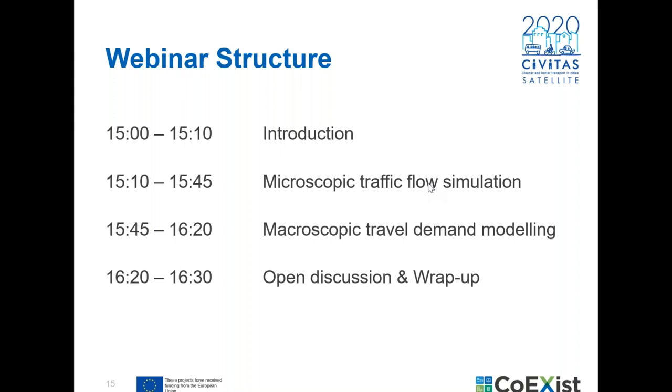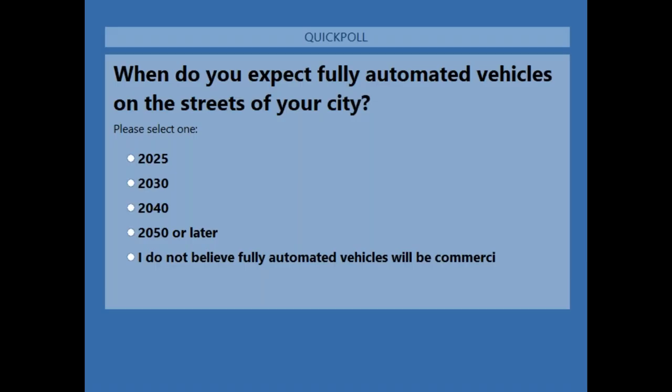Before going to the next presentation, we have a poll to learn about who has joined us today — we now see 74 attendees. Let's hear from your side when you expect automated vehicles to be available in your city. This is always very interesting because from the different backgrounds that participants have, we've learned that expectations can be quite different. I'm going to close the poll now so we can see the results.